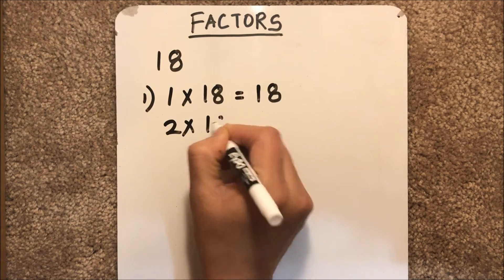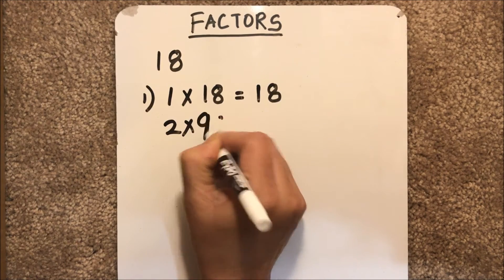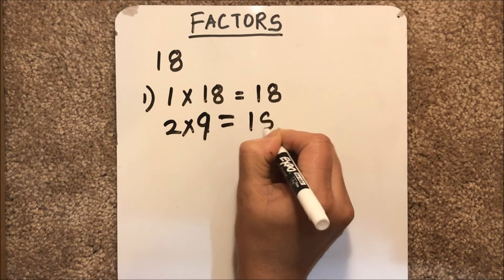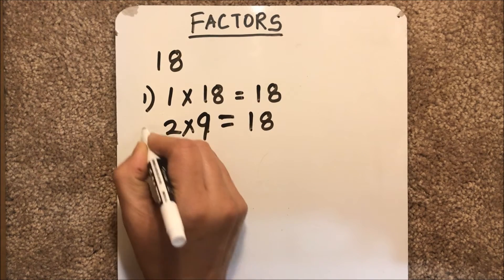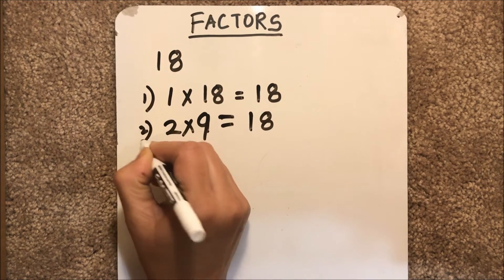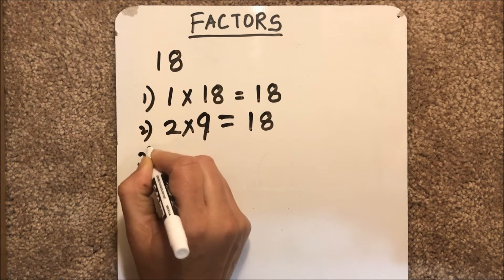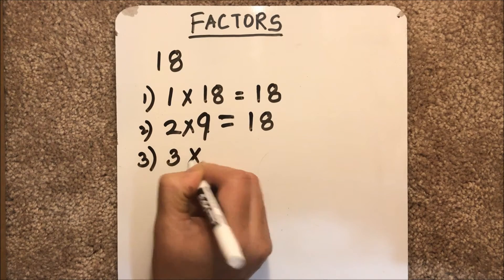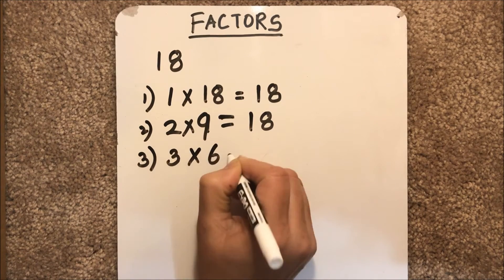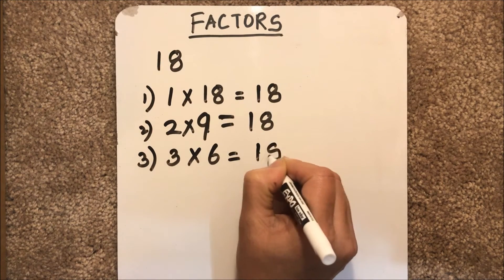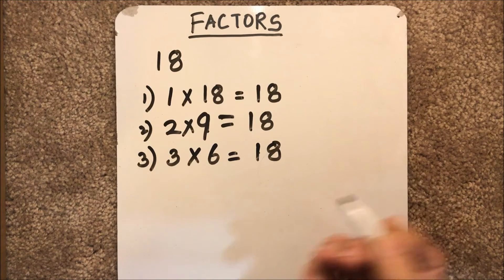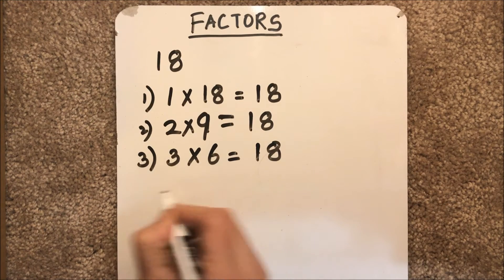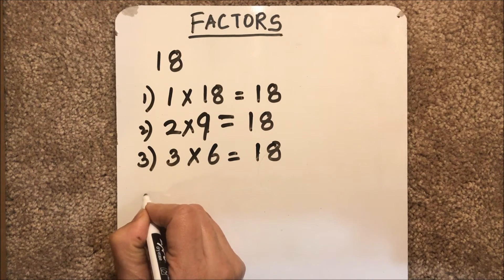2 times 9 is 18, 3 times 6 is 18. So the factors of 18 are...